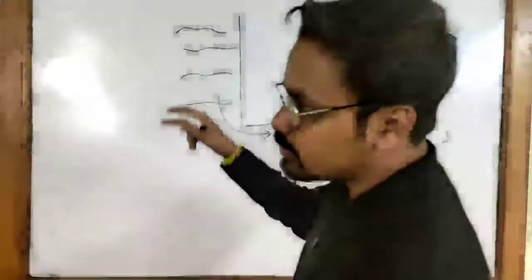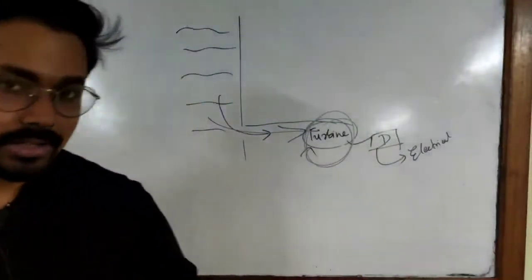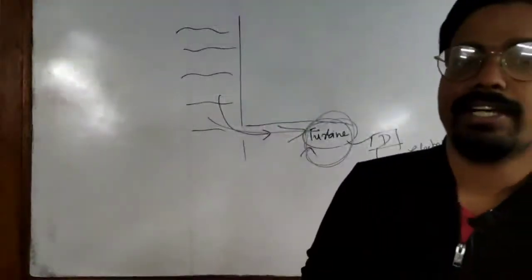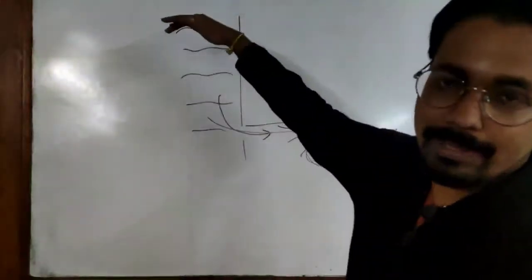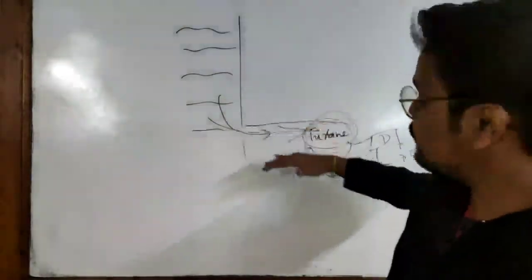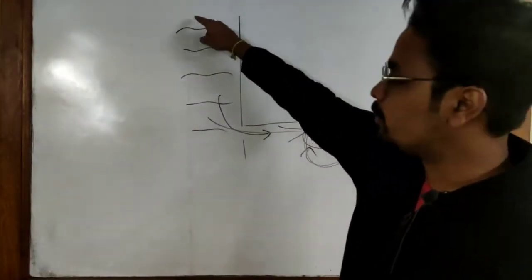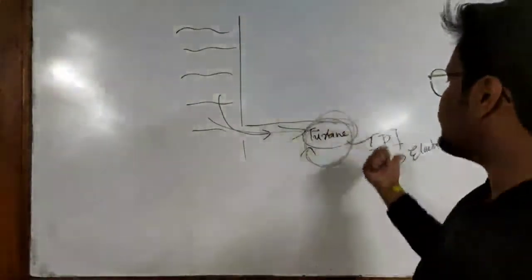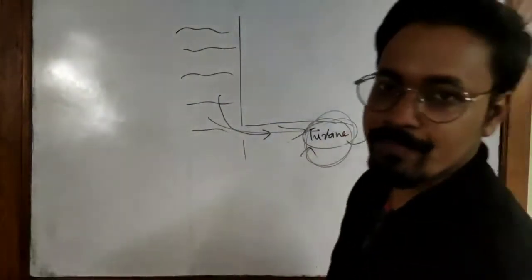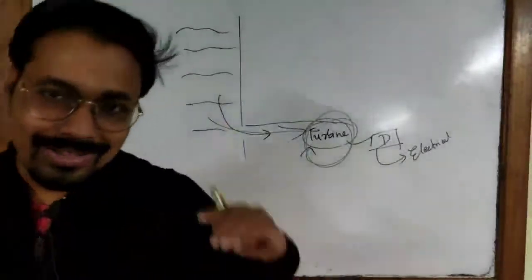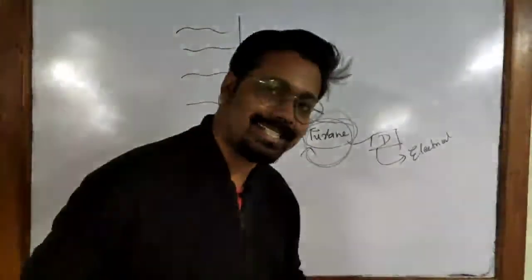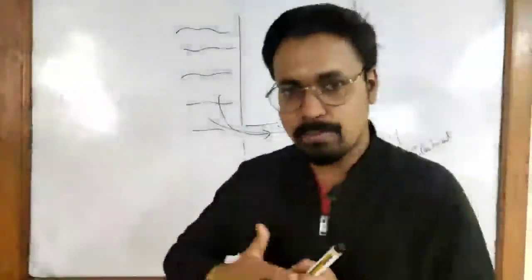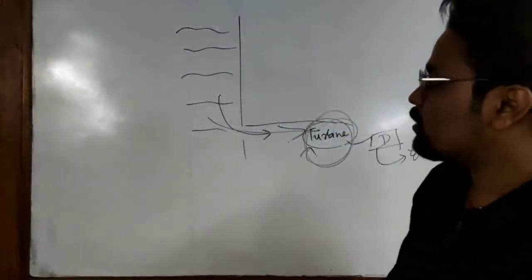We are using the flow of water — both potential energy and kinetic energy. Because of the height of the water above the turbine, it has potential energy, which is converted into kinetic energy as the turbine rotates. This kinetic energy is then converted into electrical energy by the dynamo. Electricity is easier to transfer from one place to another, which is why we convert water energy into it.